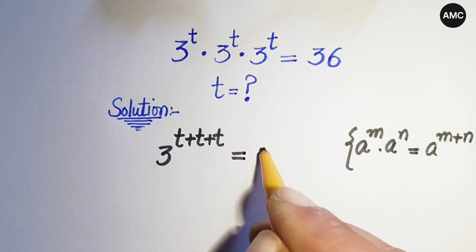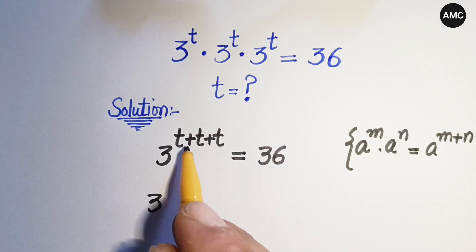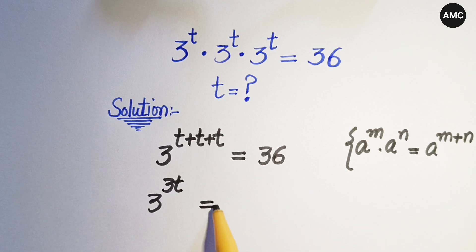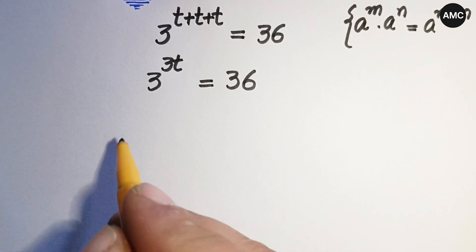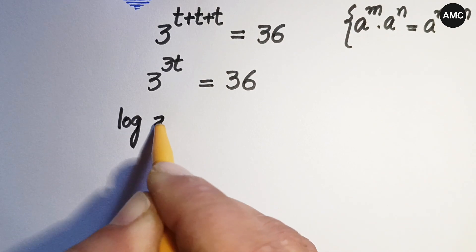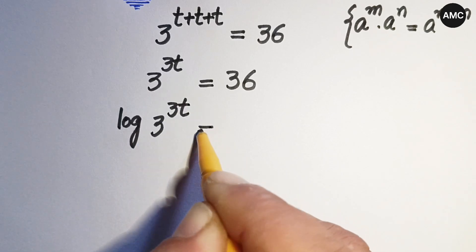This gives us 3 to the power 3t is equal to 36. Now taking log on both sides, we have log of 3 to the power 3t is equal to log 36.